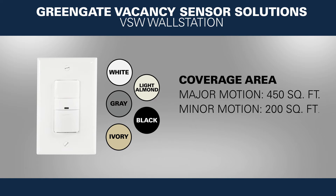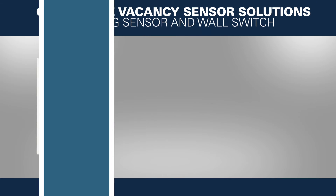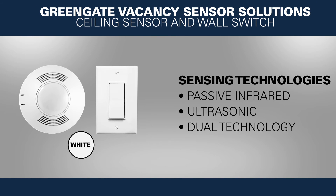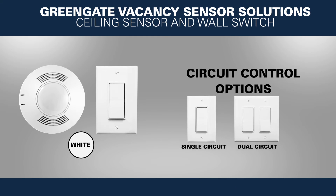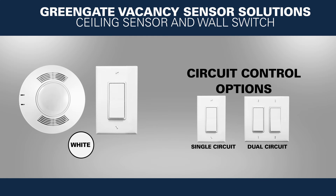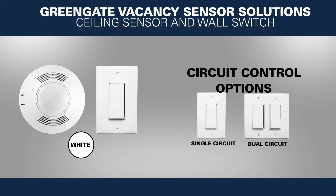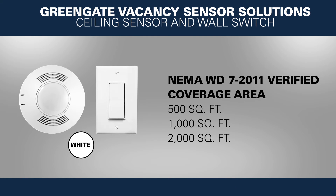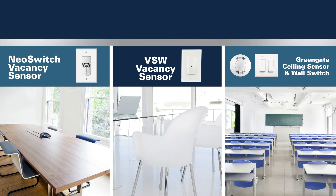One sensor detects typing and writing throughout a 200 square foot area. The combination of the ceiling sensor and wall switch meets the needs of larger spaces. This solution can control one or two relays and offers a NEMA WD7 verified coverage area of up to 2,000 square feet.